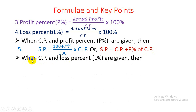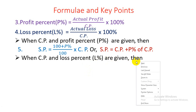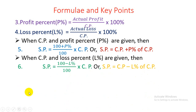When CP and loss percent (L%) are given, then SP = [(100 − L%) / 100] × CP, or SP = CP − L% of CP.